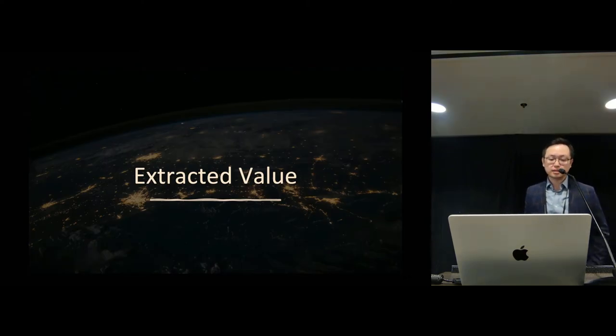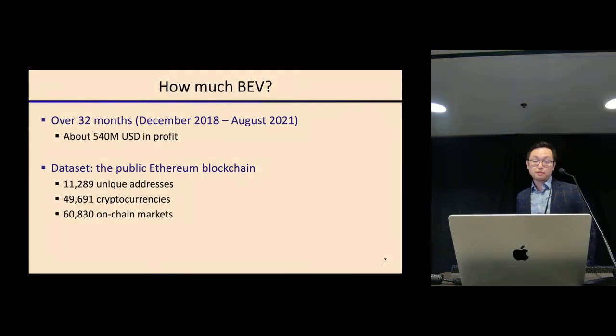You might wonder how much value has been extracted. We performed an empirical evaluation over a 32-month period. We found that about 540 million USD was extracted in profit. Our dataset only captures one single blockchain, the Ethereum blockchain. I would expect the BEV to be much bigger if someone measures the entire blockchain space. In our dataset, we found around 11,000 unique addresses extracting BEV, 50,000 cryptocurrencies, and 60,000 markets. What I want to highlight is the small markets surprisingly contribute more to BEV extraction activities. It's really important to capture as many markets and cryptocurrencies as possible to get a holistic view of the entire BEV space.